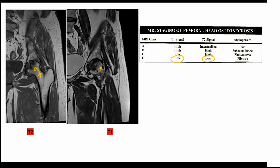Secondary signs and sequelae of AVN can also be present on MRI, including joint effusion and cartilaginous thinning, which may appear secondary to AVN.